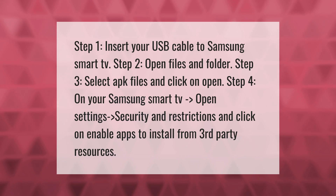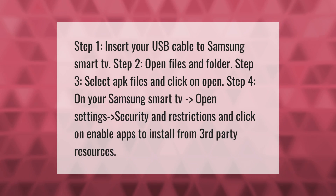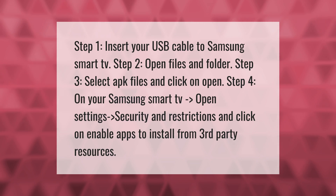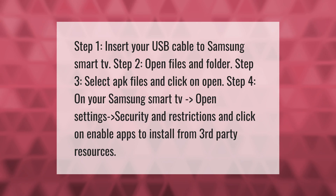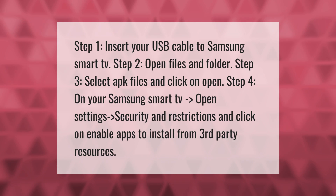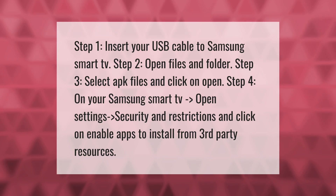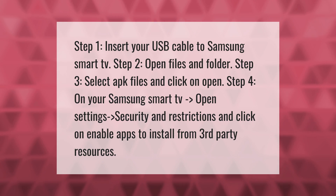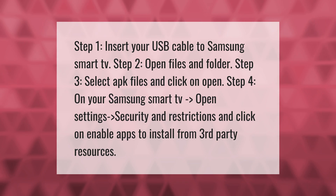Step one: insert your USB cable to Samsung Smart TV. Step two: open Files and Folder. Step three: select APK files and click on Open. Step four: on your Samsung Smart TV, open Settings, go to Security and Restrictions, and click on Enable Apps to Install from Third-Party Resources.